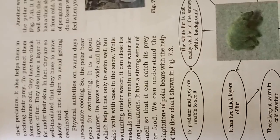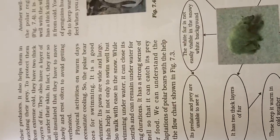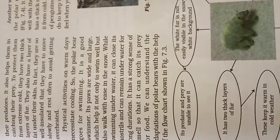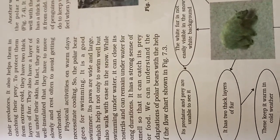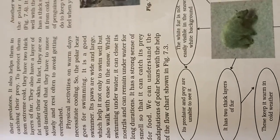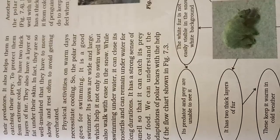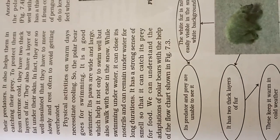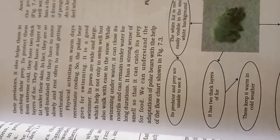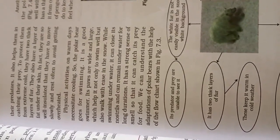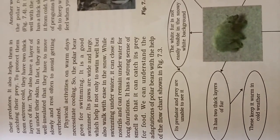To protect them from extreme cold, polar bears have a thick layer of fur. The polar bear naturally has a very thick layer of fur. They also have a layer of fat deposited under the skin, which is why the polar bear can survive in polar regions — because of the two thick layers of fur and the fat deposited under the fur. In fact, they are so well insulated that they have to move slowly and rest often to avoid overheating.